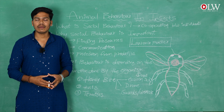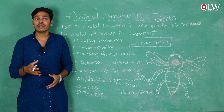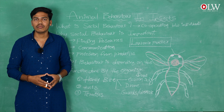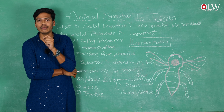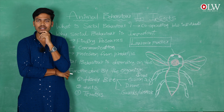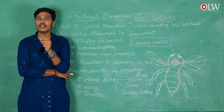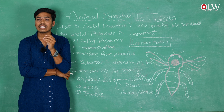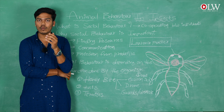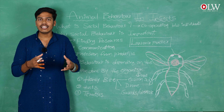Hello everyone, welcome to OLW Online Watch. I'm Saptagiri. Up to now we have been observing social behavior in human beings as well as other animals, but today we are going to discuss social behavior in insects. Social behavior simply means communication between individuals. Most insects lead their life in colonial forms — groups of individuals combined together, living in colonies.